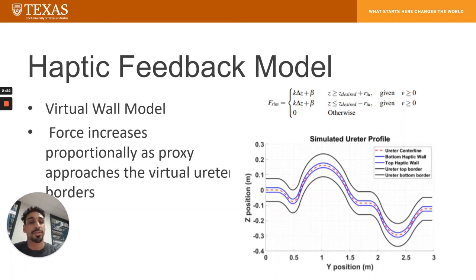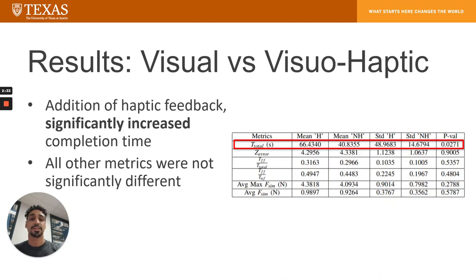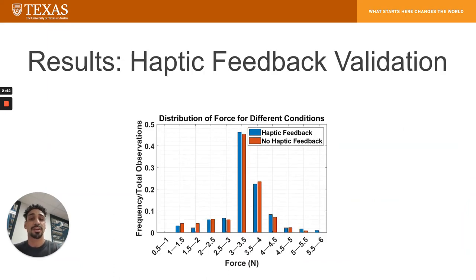Using this force model, we conducted a human user study of complete novices. Each participant completed six trials: three with visual feedback and three with visual and haptic feedback, where each trial consists of one pass going from the start to the end of the ureteral path. Interestingly, trials with haptic feedback took statistically significantly longer than trials with only visual feedback. We found that the magnitude of the model force distribution matched well with the measured forces of ureteroscopy in literature, being in the range of zero to six newtons for both conditions.